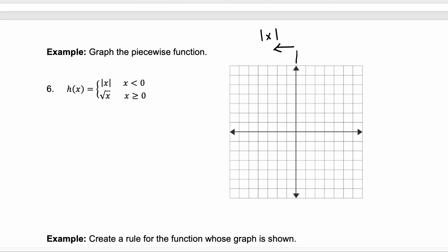That's where your absolute value of x is going to be. And we know what that looks like. That's a v, right? But we only want that left side of the v. Because once we get to 0, we transition to the square root of x.